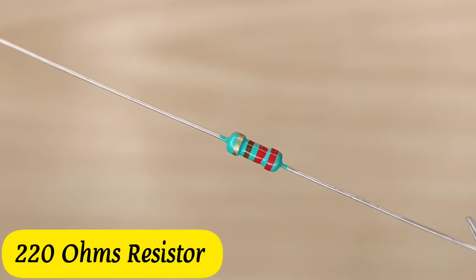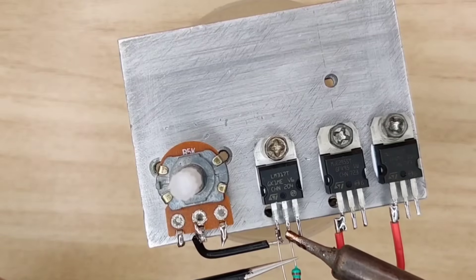Take two 20 ohm resistors and solder between pin 1 and 2 of LM317.